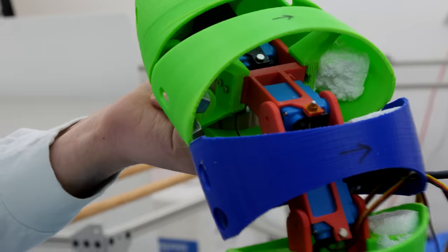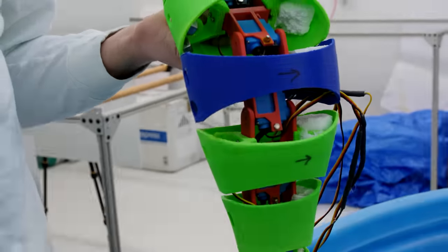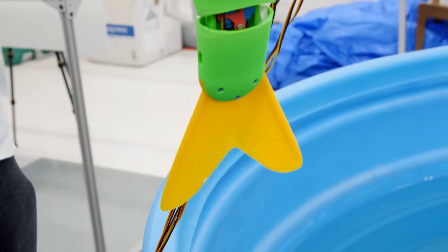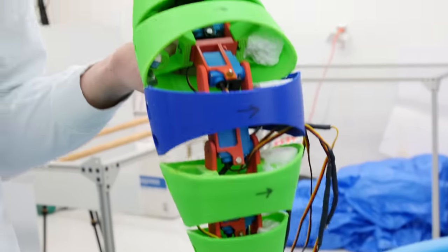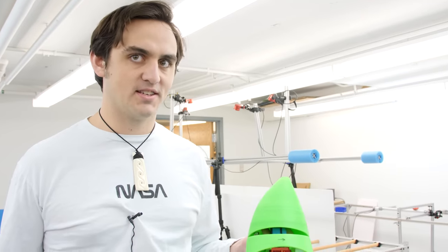So this is our fish robot. It's a robotic platform that we use to answer questions about fish locomotion that we can't with live fish, because robots do what you want, whereas the animal doesn't always do what you ask it to.